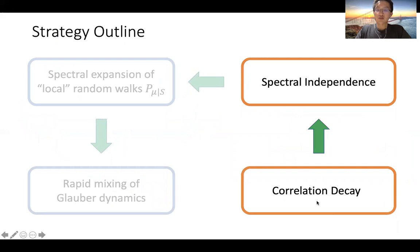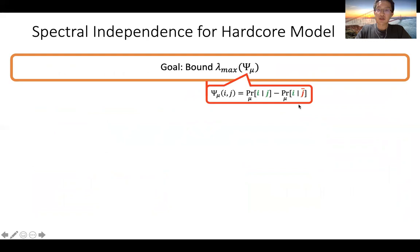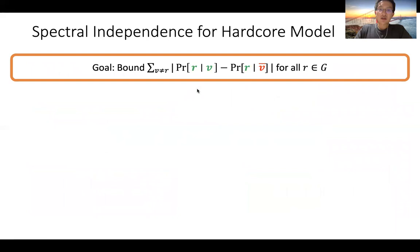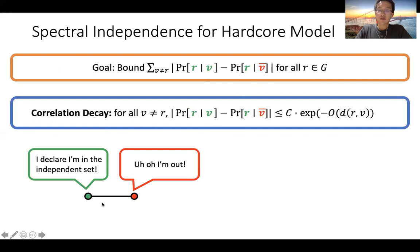Let me briefly discuss how the correlation decay approach can be used to obtain spectral independence bounds. Our goal is to upper bound the maximum eigenvalue of the influence matrix, whose entries are given by differences of marginal probabilities. The maximum eigenvalue is upper bounded by the maximum absolute row sum, so it suffices to upper bound the total influence of other vertices on a fixed vertex. Correlation decay says exactly that this marginal difference is upper bounded by some constant c times something exponentially small in the distance between the two vertices.